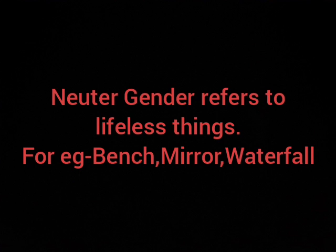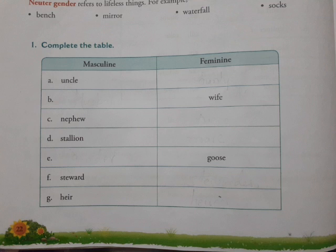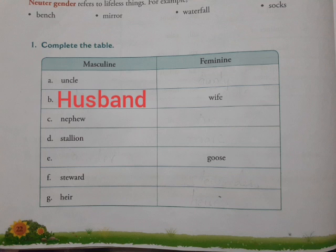Now let us see question one: complete the table with masculine and feminine. The first word is uncle, written in the masculine column — so the feminine of uncle is auntie. The next word is wife, written in the feminine column — so the masculine of wife is husband. Your homework is to complete the rest of this table by yourself.